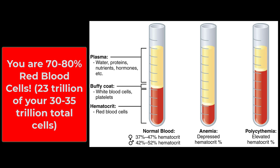How can you make sense of this? Well, there are trillions of red blood cells, somewhere in the neighborhood of 23 to 25 trillion red blood cells in your body. There are only 30 to 35 trillion cells in your body. So from a cell count standpoint, you are almost all red blood cells. Of course, these are very tiny cells and water isn't cellular, so from a volume standpoint that isn't true, but from a cell standpoint, that is actually true.